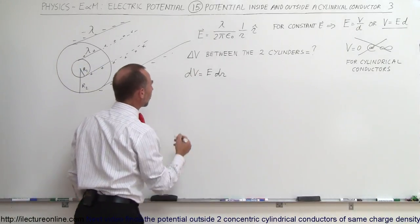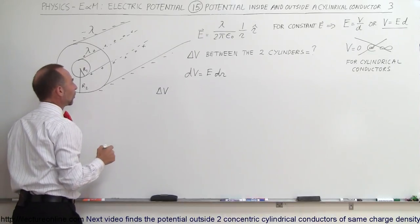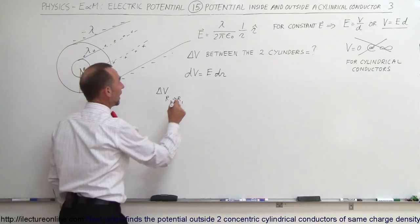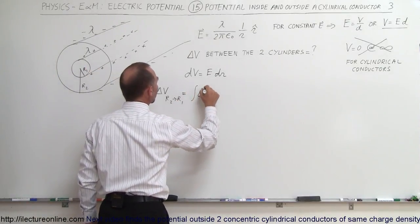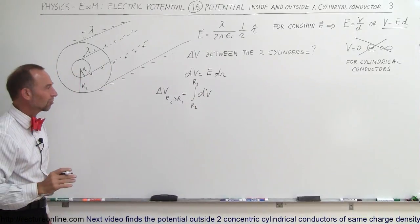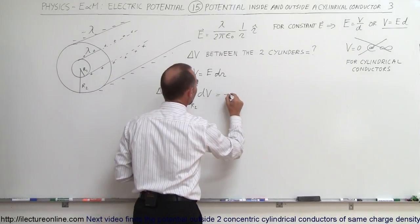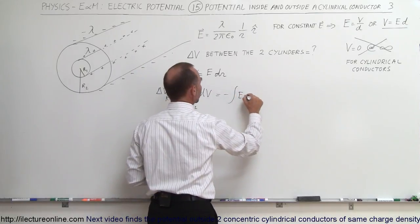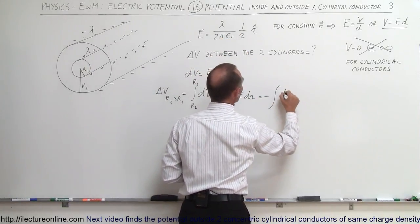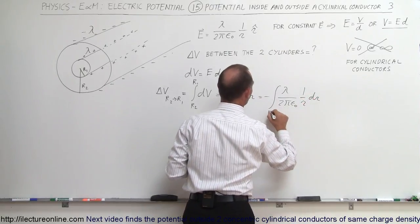We want the delta V between the two cylinders. Let the radius of the outer cylinder be R2 and the radius of the inner cylinder be R1. We'll integrate from the outer cylinder to the inner cylinder. The change in potential is equal to the integral of all the dVs from R2 to R1. Since the potential increases as we get closer to positive charge — as R decreases — we need a negative sign, so this is minus the integral of E dr from R2 to R1. The electric field outside the cylinder gives us: minus the integral of lambda divided by 2 pi epsilon-naught times 1/r dr, from R2 to R1.